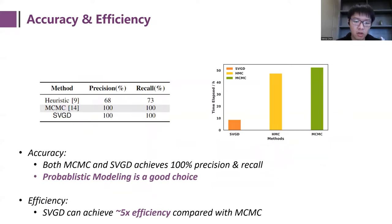Finally, we compare our model with some baseline methods in terms of accuracy and efficiency. For accuracy, we validate the measurement results on a small set of ground truth collected by a project named EBGP Saviors. The results show that both MCMC and SVGD achieve 100% precision and recall. We show that probabilistic modeling is a good choice for the problem. Then for efficiency, we compare the execution time of SVGD and MCMC. And it can be seen that SVGD only needs about 20% of the execution time of MCMC to reach convergence. This means that using SVGD for solution makes about five times the improvement in efficiency.